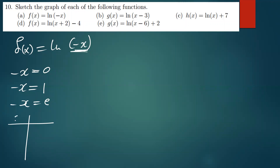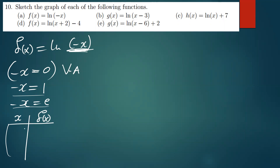We set up a table with x and f(x). When you equate what's in the brackets to zero, you get the vertical asymptote — the line which the curve will never meet. So equating negative x to zero gives us x equals zero as our vertical asymptote.